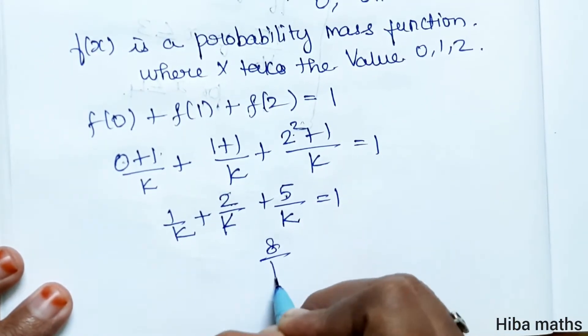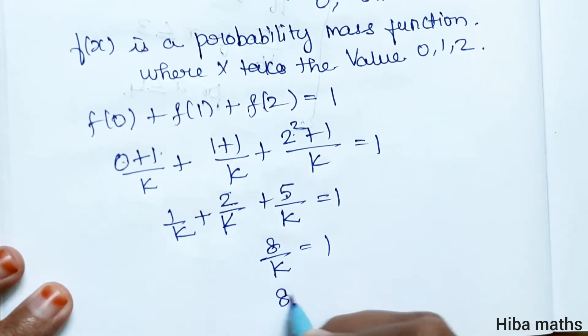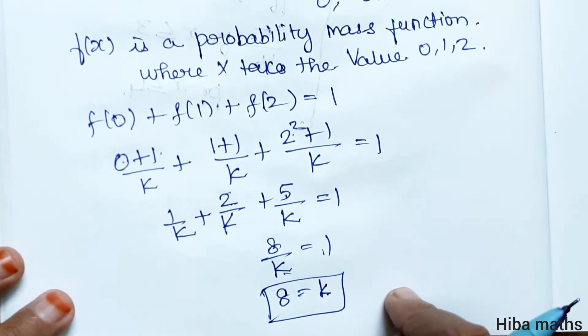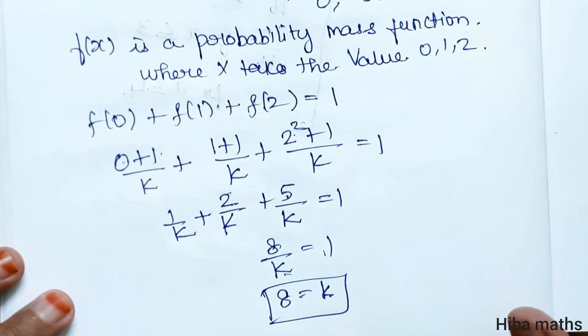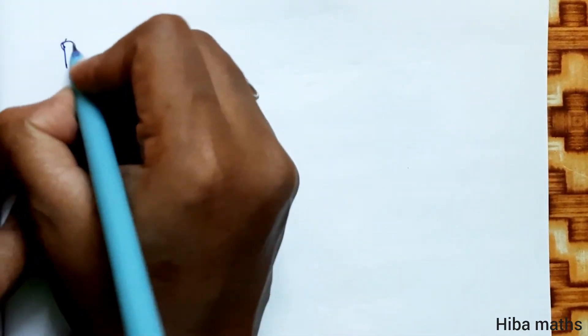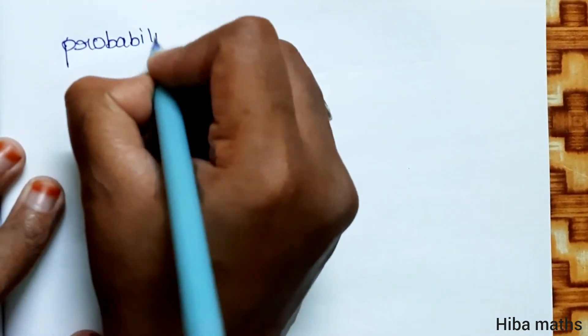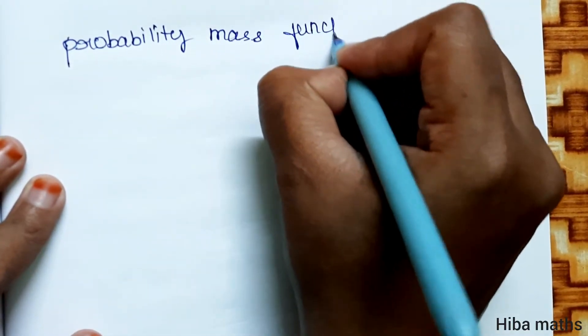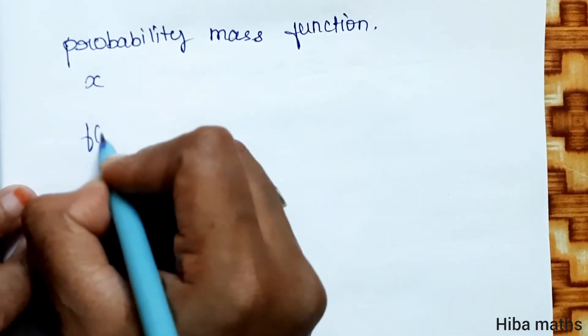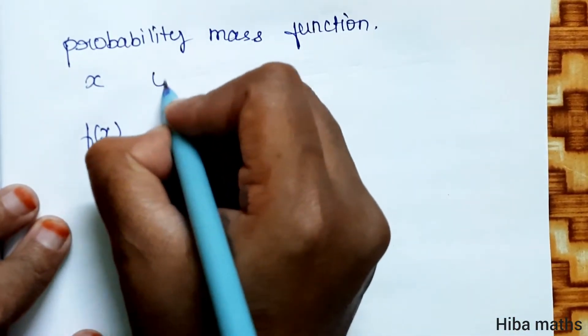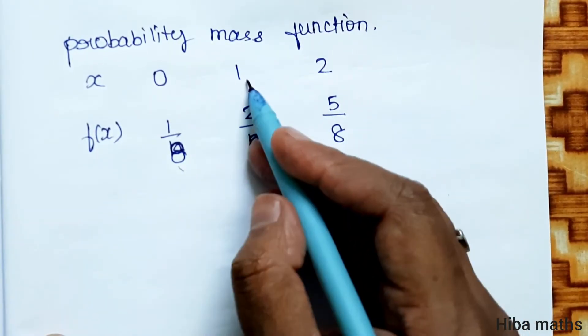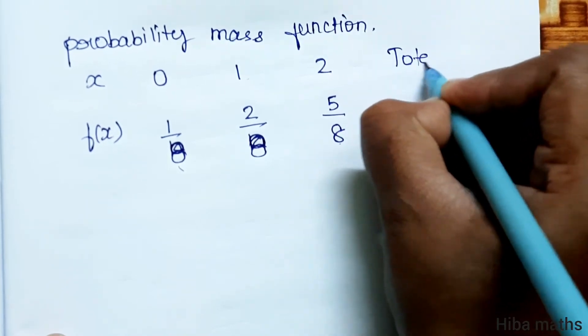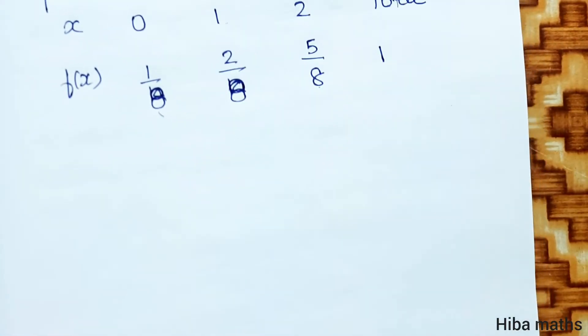Now for the probability mass function, we create a table: x values are 0, 1, 2; f(x) values are 1/8, 2/8, 5/8; and the total is 1.